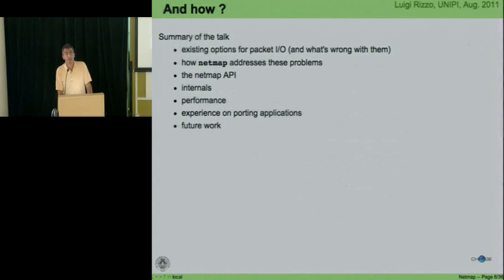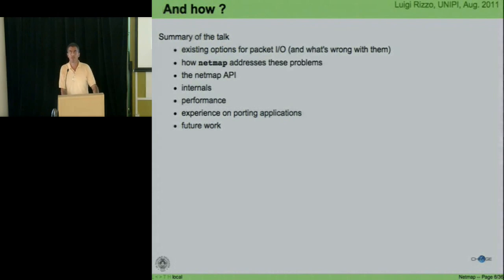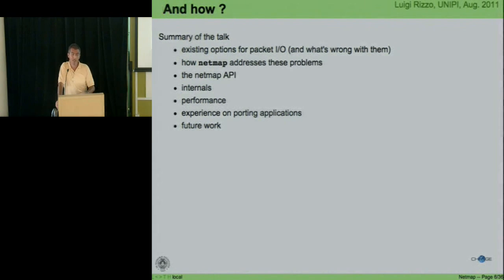To see how we achieve this, we need to look at current APIs to access network devices, find out what the problems are, show how NetMap addresses those problems, introduce the NetMap API, discuss implementation details and performance data. We'll also discuss experience importing some applications to NetMap — because if the applications are well written, you replace the IO subsystem with a faster one and immediately get a nice speedup. If the application has its own limitations, then you still need to investigate further. We'll end with future work.